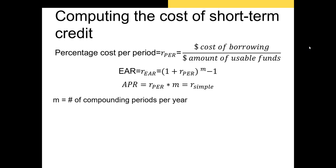The EAR or effective annual rate is: (1 + percentage cost per period)^m − 1, where m is the number of compounding periods per year. The APR or annual percentage rate is just our periodic interest rate times the number of compounding periods per year. APR is a simple interest rate — it does not take into account the effects of compounding, which is what the EAR does.